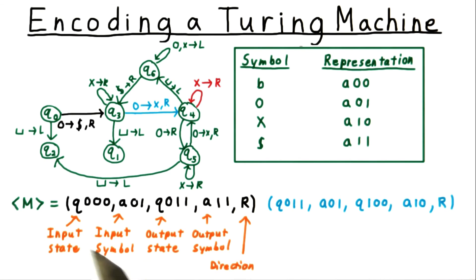So that's the convention we'll use to write out the transition function. It's just a sequence of these five tuples of this form: input state, input symbol, output state, output symbol, and then direction.